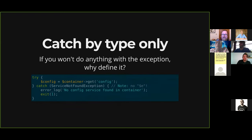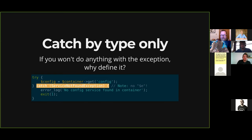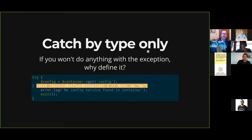Next syntax change: catch by type only. How many times have you done a catch statement and not even used the exception returned? I've done it a ton, particularly when logging and it's not important what the exception is, just that it happened. I might know a service was not found without needing to inspect the exception. Note that I am just catching a ServiceNotFoundException with no $e. This is something you can now do in PHP 8, which is really nice particularly if you're using static analysis tools that will say 'you've declared $e but not used it.'